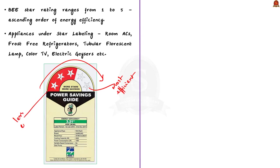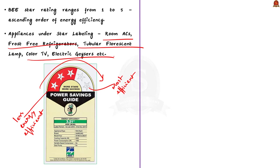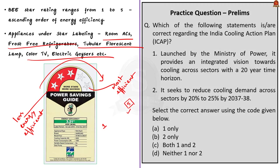Appliances covered under star labeling include room air conditioners, frost-free refrigerators, tubular fluorescent lamps, color TVs, electric geysers, and others. While purchasing an appliance, one can ask for an energy efficient product or check its star rating. If given a choice between 1-star and 5-star energy efficiency, it is advisable to go for the 5-star product because it will not only conserve energy in the long run but will also lead to reduced carbon emissions.